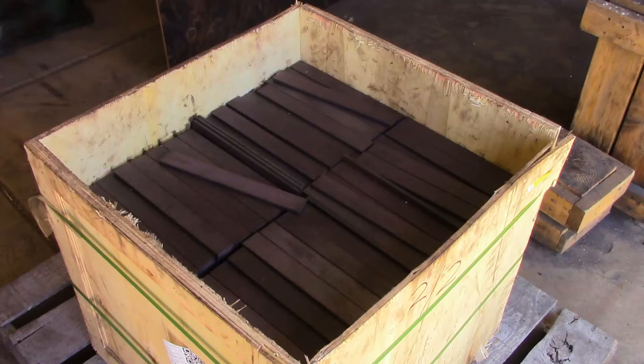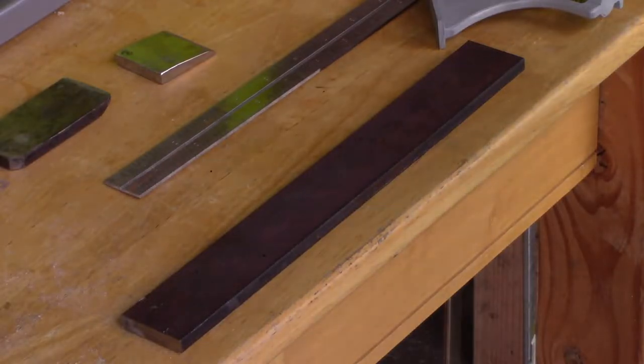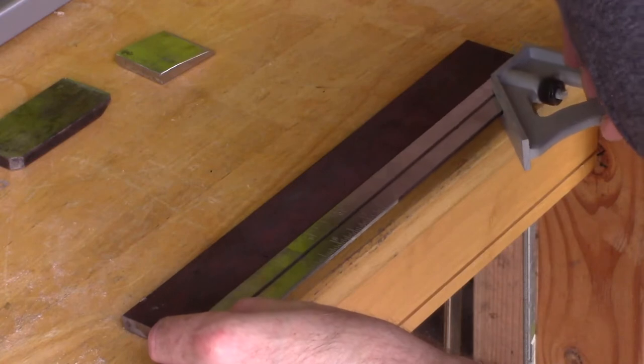For the plane iron and chip breaker of this plane, I'm using W-2 knife making steel. Link in the description. The steel is one and a half inch wide and five sixteenths thick. I begin by marking and cutting a bar into three inch segments.